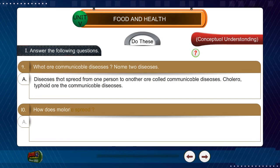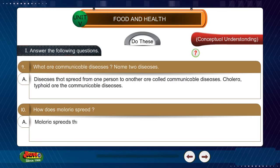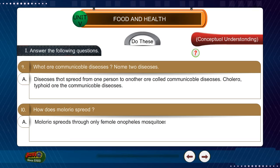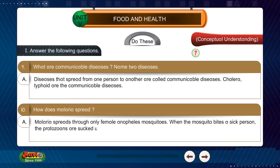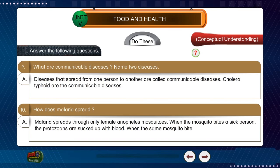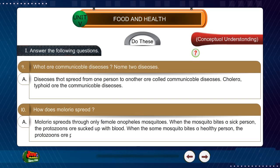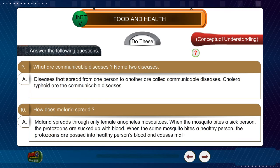Question 10: How does malaria spread? Answer: Malaria spreads through only female Anopheles mosquitoes. When the mosquito bites a sick person, the protozoans are sucked up with the blood. When the same mosquito bites a healthy person, the protozoans are passed into the healthy person's blood and cause malaria.